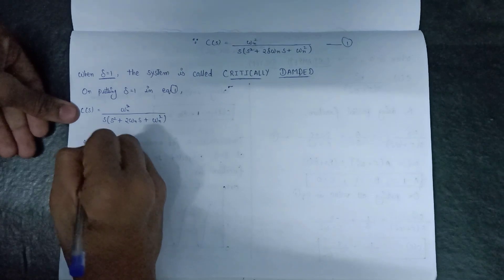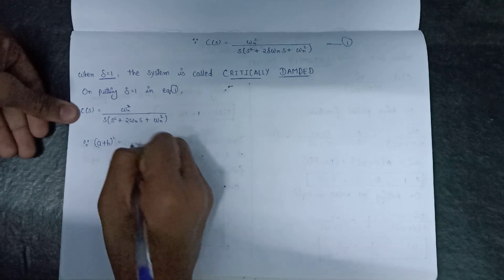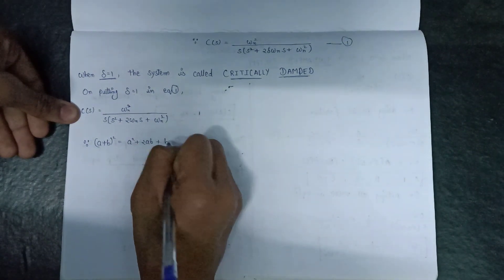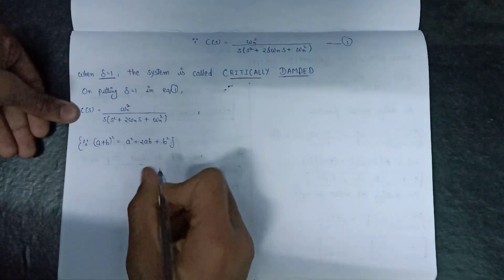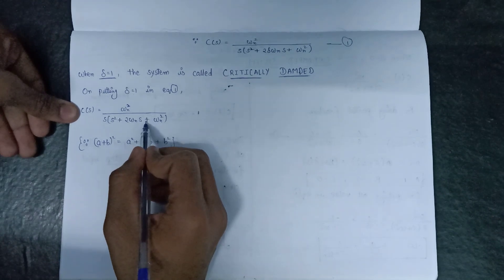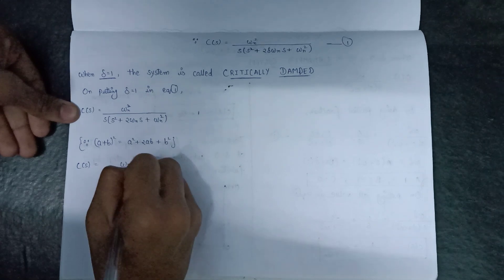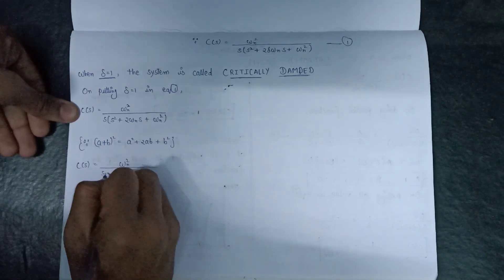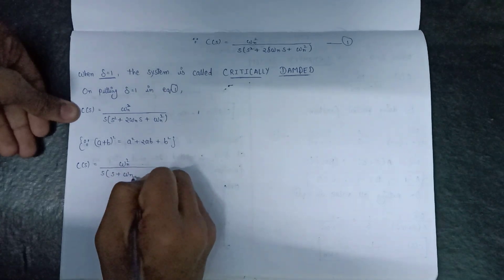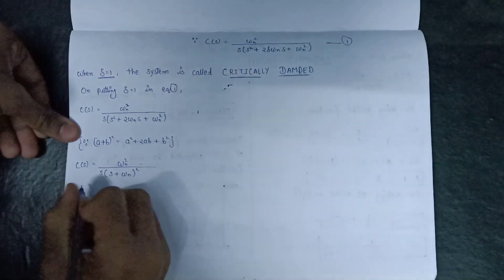We also know that (a + b)² = a² + 2ab + b². Applying this formula to the denominator, we can write C(s) = ω_n² / [s·(s + ω_n)²]. We then proceed to do the partial fraction decomposition of this expression.